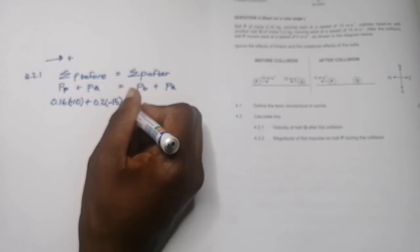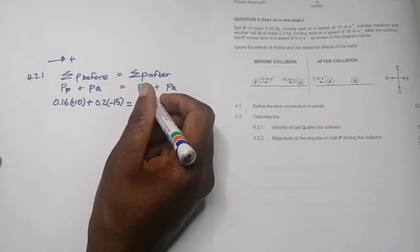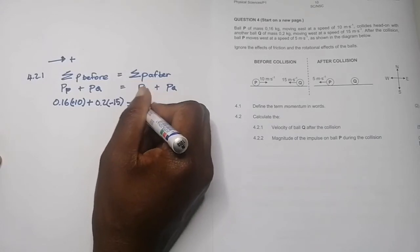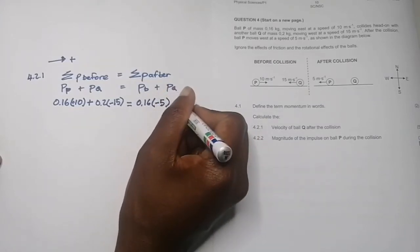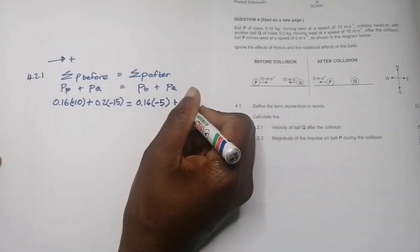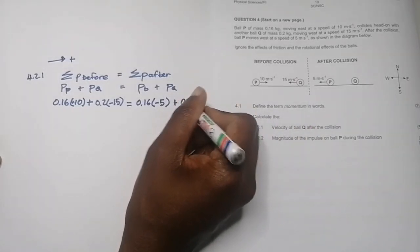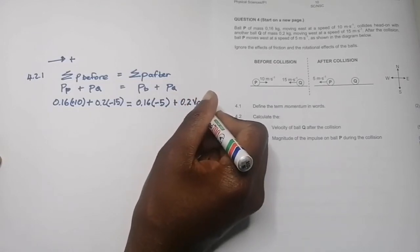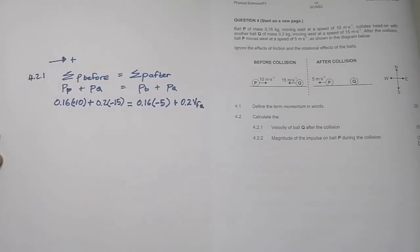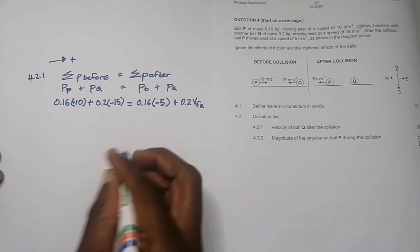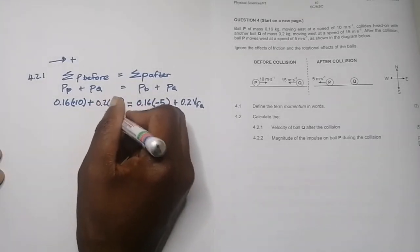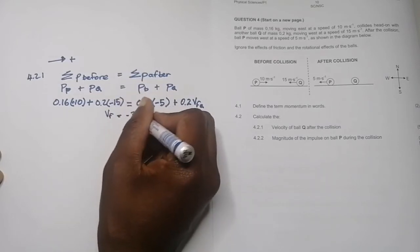After collision, ball P with mass 0.16 is now moving at negative 5 meters per second, and what we want to find out is the velocity of ball Q. The mass of Q is 0.2, and we want to find the velocity of Q final. All that we're going to do is some mathematical gymnastics. We'll find the sum there, and obviously we're going to find the final answer. As I work it out, I find a velocity of minus 3 meters per second.